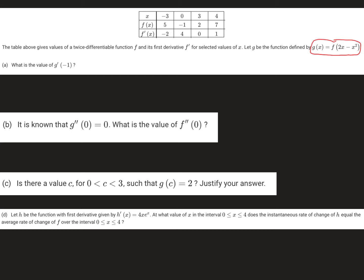First question asks to find g prime of negative 1. So first I have to find g prime of x, and to do that, that's of course the chain rule. Outside function is f, so derivative of that is f prime. Leave the inside function alone. And then multiply by the derivative of what's inside.